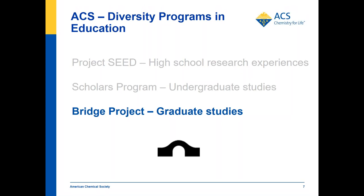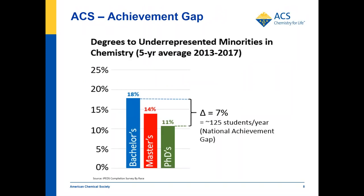The ACS Bridge Project is founded on one intriguing result. Looking at data from the IPEDS completion survey, 18% of undergraduate degrees go to underrepresented minority students, whereas only 11% of PhDs come from an underrepresented minority background. That seven percent gap — which we call the national achievement gap — is significant. In an ideal world we would close this gap so the PhD percentage matches the undergraduate degree percentage.